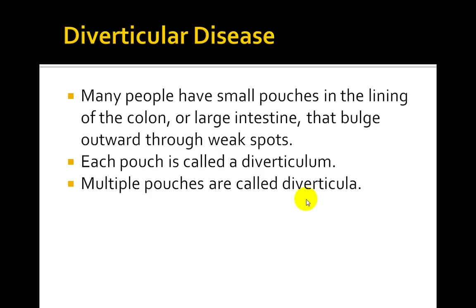Diverticular disease consists of outpouchings of the mucosa and submucosa — these are false diverticula — that herniate through the colonic muscle layers in areas of intraluminal pressure. Most commonly these are found in the sigmoid colon.